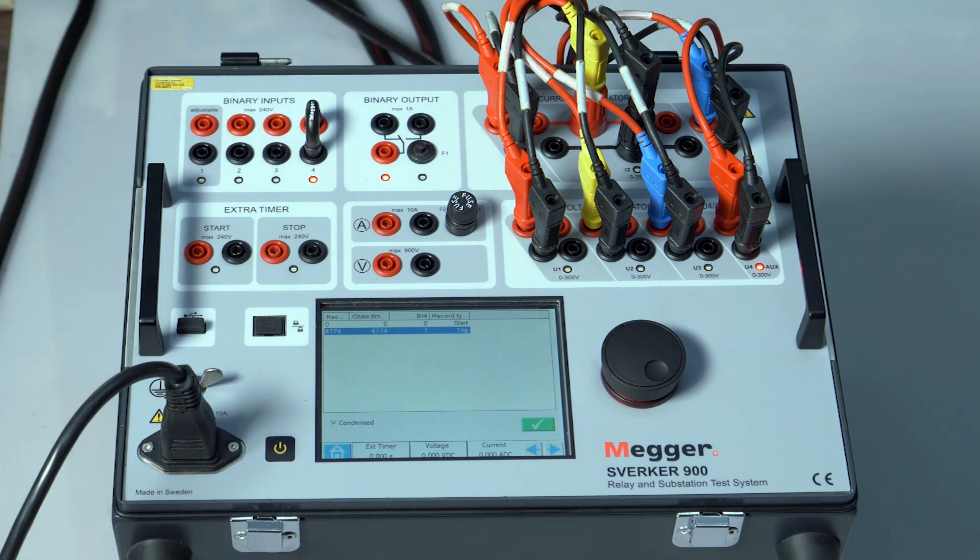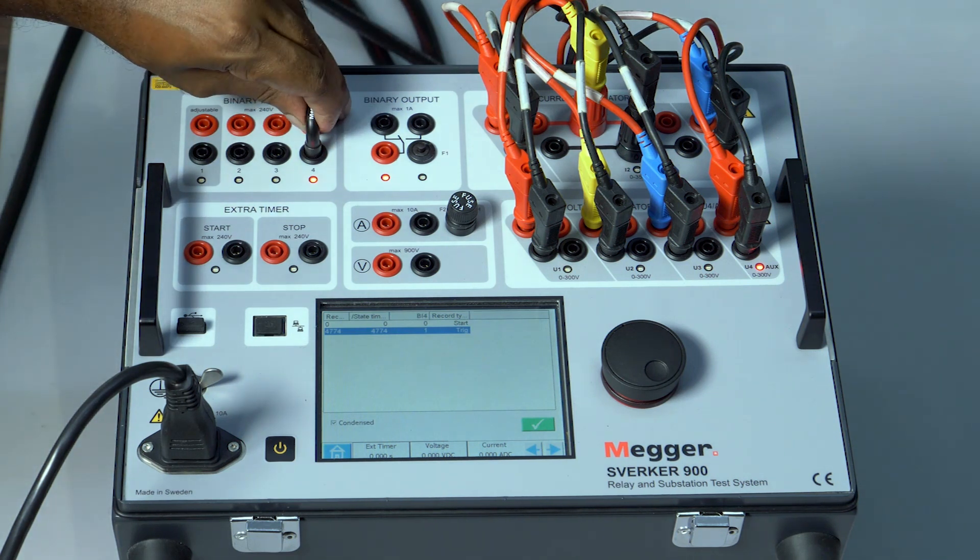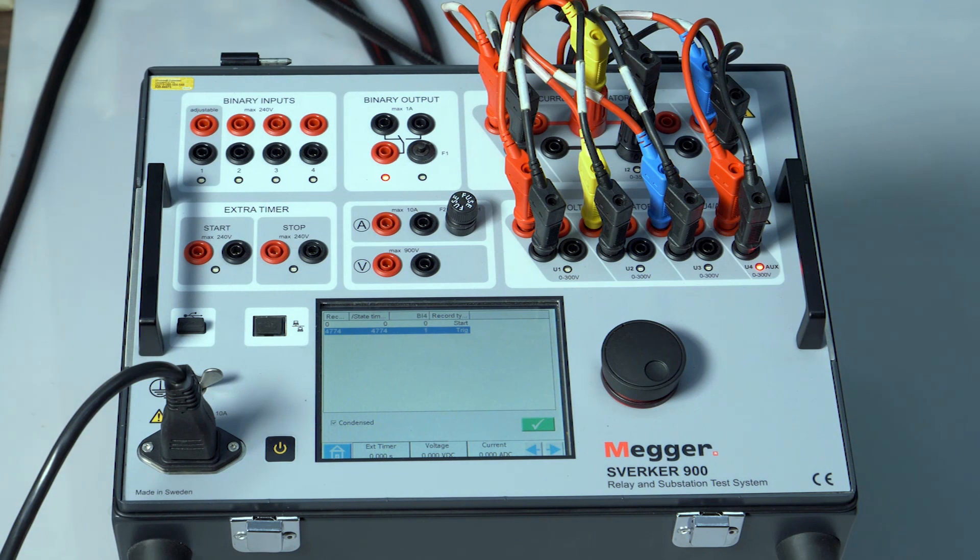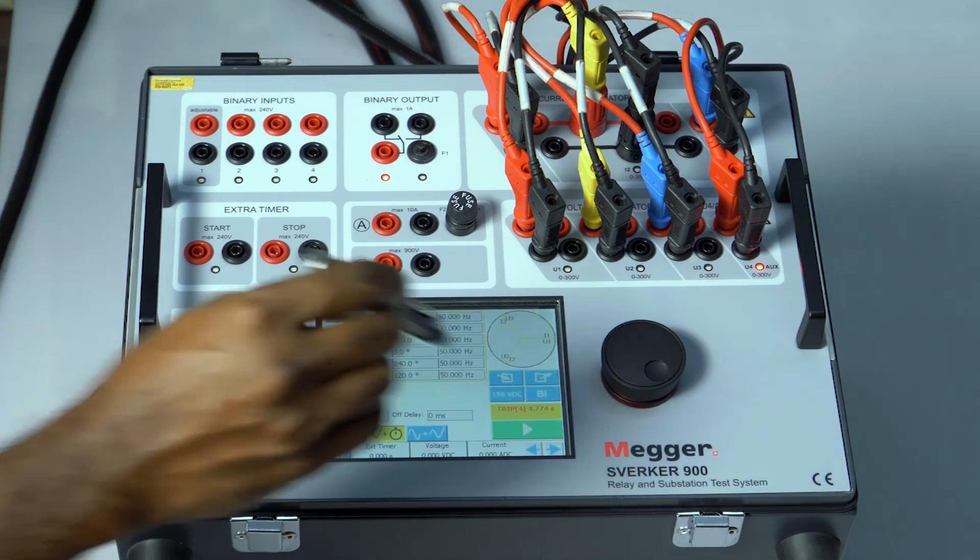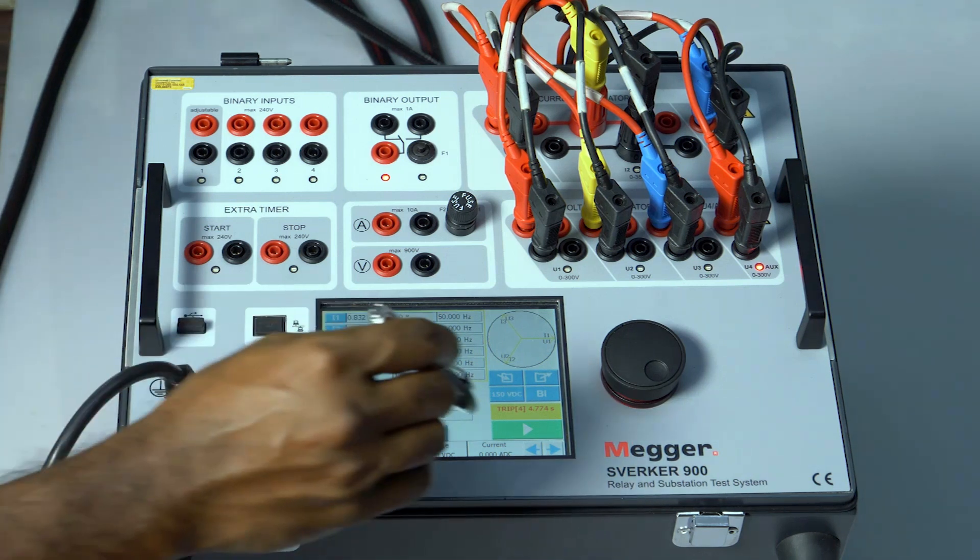We can see it stopped directly. So that's the difference between greater than equal 1 symbol and ampersand symbol. Now let's do one more experiment. Let me short binary input 1, press the play button.